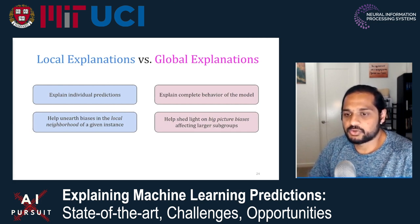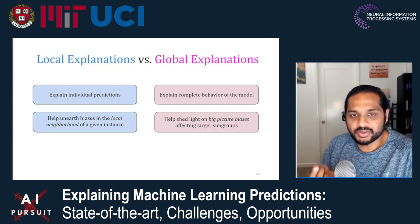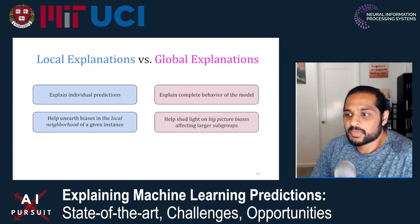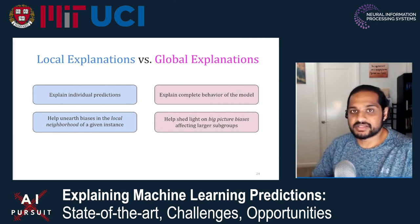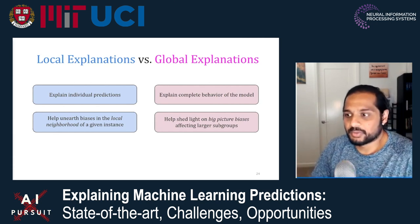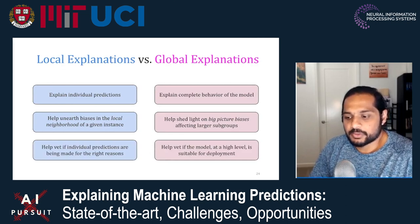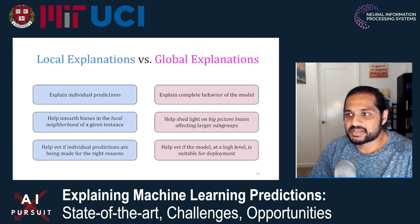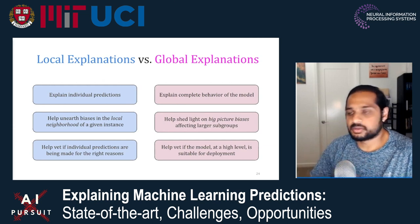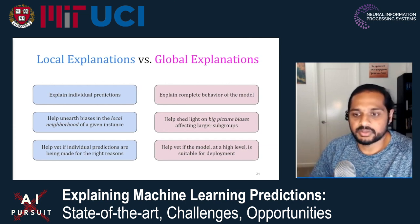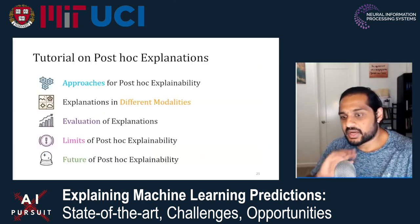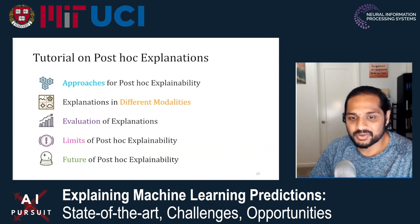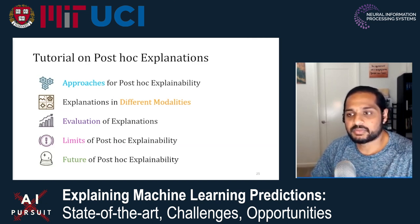There's a spectrum — you can increase the neighborhood of local and make it global. At a high level, local explanations try to explain individual predictions, whereas global explanations try to explain the complete behavior of the model. Local explanations tend to be more useful for unearthing biases in local neighborhoods of a given instance — why was this instance predicted a certain way? Global explanations shed light on big-picture biases pervasive throughout the whole model. Local explanations can help vet individual predictions, whereas global explanations help vet the whole model for deployment.